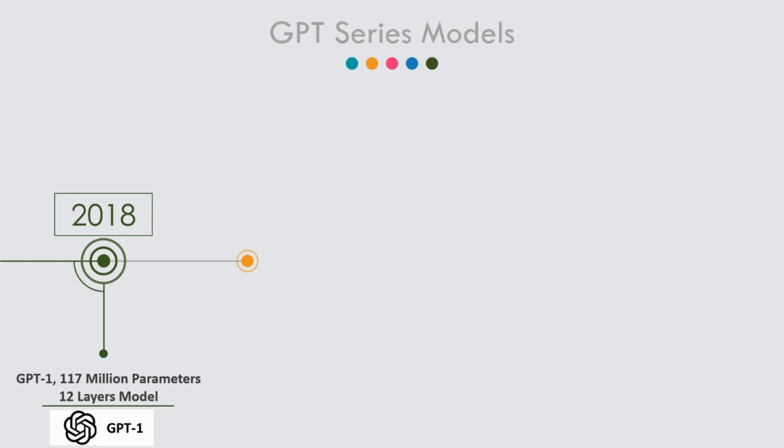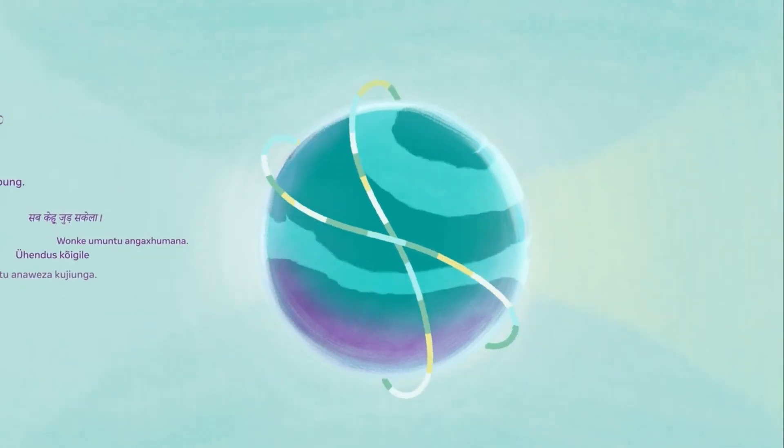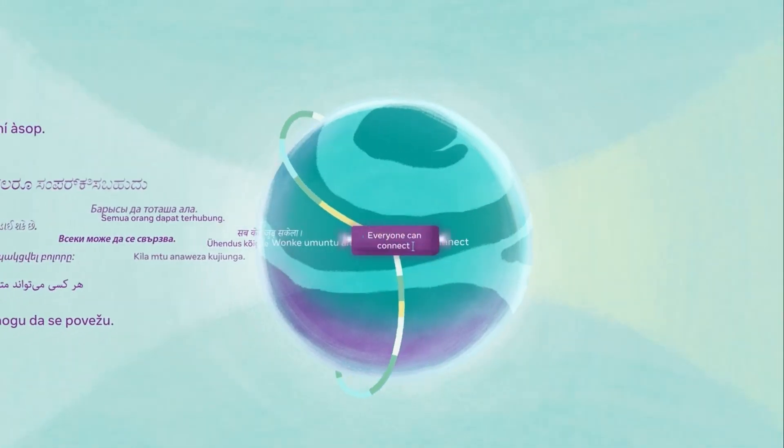In 2019, GPT-2 was introduced with 1.5 billion parameters, trained on an even larger corpus of text data. Then in 2020, OpenAI released GPT-3 with a staggering 175 billion parameters, making it 100x larger than its predecessor and trained on an even larger data set of text corpus collected from the internet.